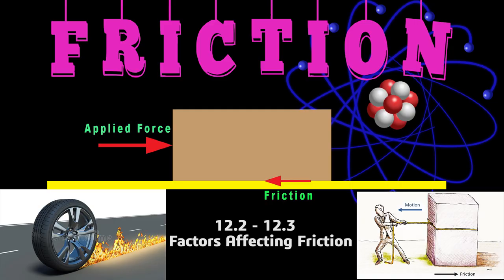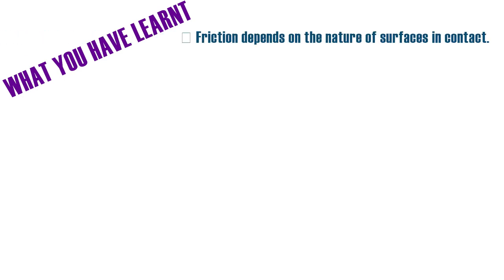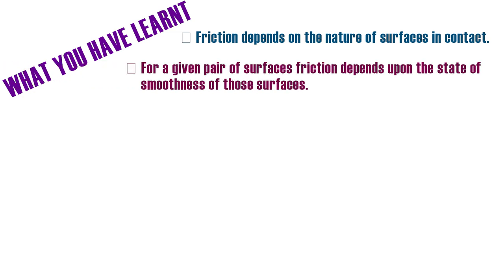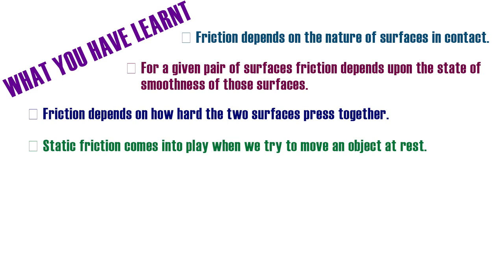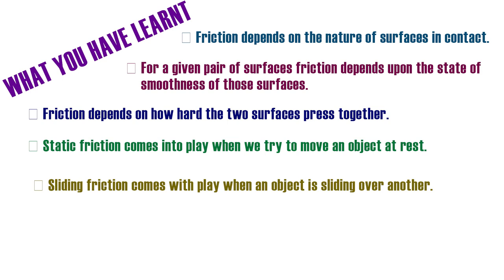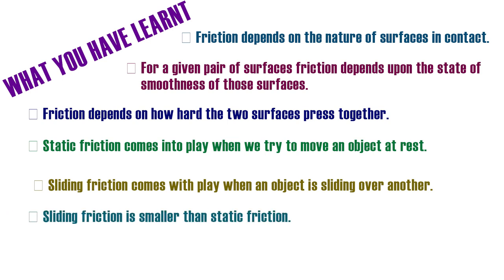This covers today's topic — Factors Affecting Friction, Activities 12.2 and 12.3. Here are the key points to remember: Friction depends on the nature of surfaces in contact. For a given pair of surfaces, friction depends on the state of smoothness of those surfaces. Friction depends on how hard the two surfaces press together. Static friction comes into play when we try to move an object at rest. Sliding friction occurs when an object slides over another surface. Sliding friction is smaller than static friction.